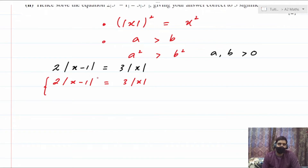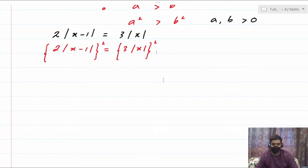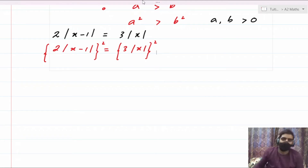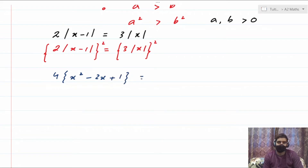Taking the square of the left side: you square 2|x − 1|. The 4 comes out front, then you expand (x − 1)² using the identity a² − 2ab + b², giving x² − 2x + 1. On the right side, squaring 3|x| gives 9x².